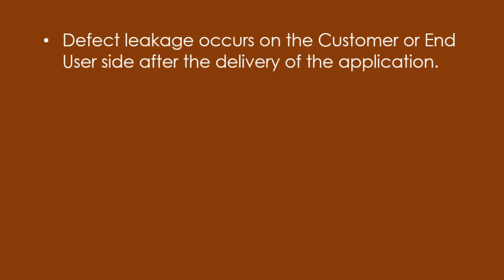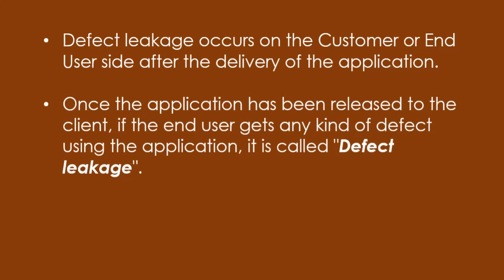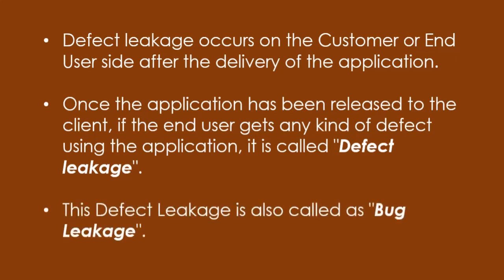Defect leakage occurs on the customer end or the user side after the delivery of the application. Once the application has been released to the client, if the end user encounters any kind of defect using the application, it is called defect leakage. It is also known as bug leakage.